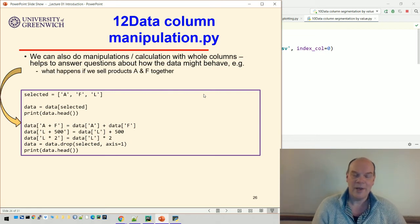For example, what happens if we sell products A and F together? Suppose they become a bundle, you could only buy them as two things. We can just take a column and we can create a column called data A and F, which is created from data A plus data F.